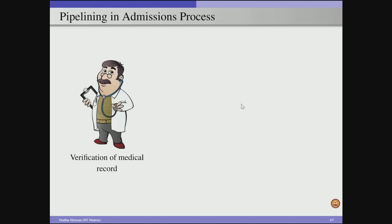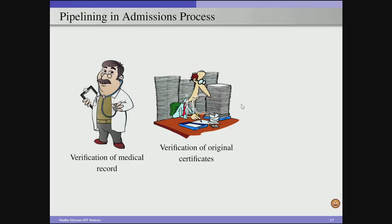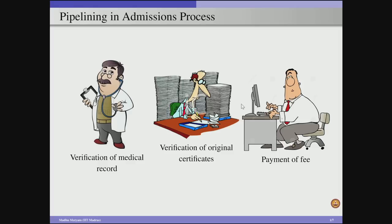Consider the admissions in an engineering college or university. This consists of the set of steps a student has to go through for taking up a seat. First, he has to go for verification of medical records through a doctor. Next, the student has to go to a person who will verify the certificates. And finally, once a seat is allotted, the student has to go to a person to pay the fee.